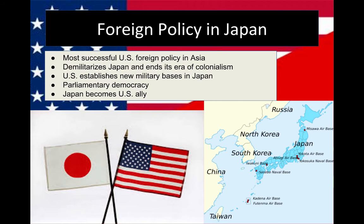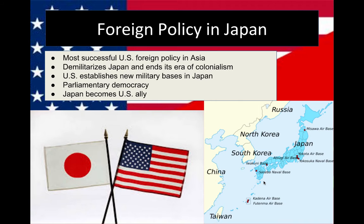They're also going to take the colonies away from Japan that they had established in their era of aggression before World War II. For example, Japan is going to lose Manchuria and Taiwan. Then towards the end of the occupation period, the US enters into a series of treaties with Japan that allows them to establish military bases throughout the country. This map shows the locations of some of these military bases, meaning the US will have more oversight over this region and can prevent Japan from remilitarizing in the future.